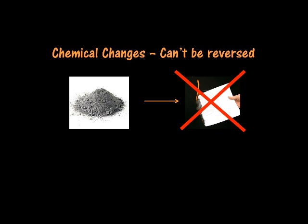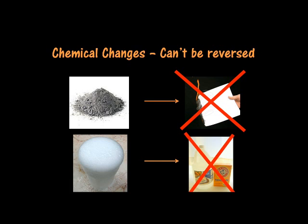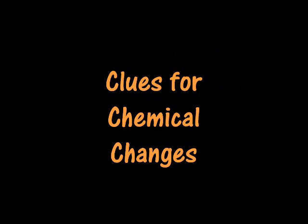Chemical changes are very difficult or impossible to reverse or undo. I can't take that ash and change it back into paper. I also can't take that carbon dioxide gas and change it back into vinegar and baking soda. Once a new substance has been created, it can't be changed back into the original substance. Sometimes it's hard to see the changes happening during a chemical change, because the change is happening as atoms and molecules are being rearranged to form new compounds, which make new substances.